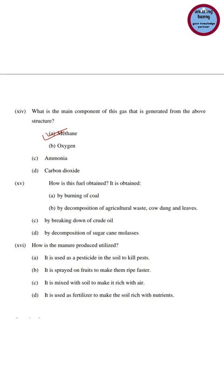The main component of biogas is methane. The fuel is obtained by decomposition of agricultural waste, cow dung, and leaves — option B. Question 16 asks how the manure produced is utilized. The correct answer is option D: it is used as fertilizer to make the soil rich with nutrients.